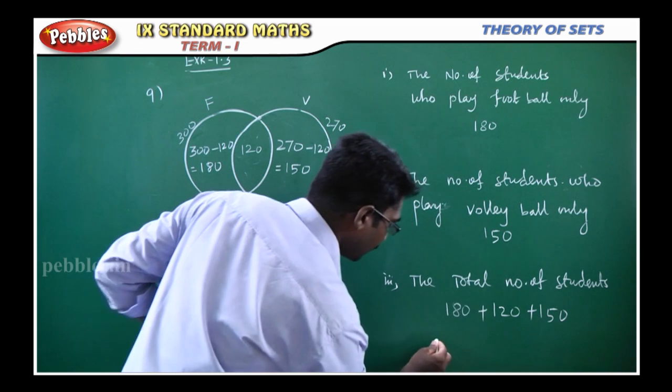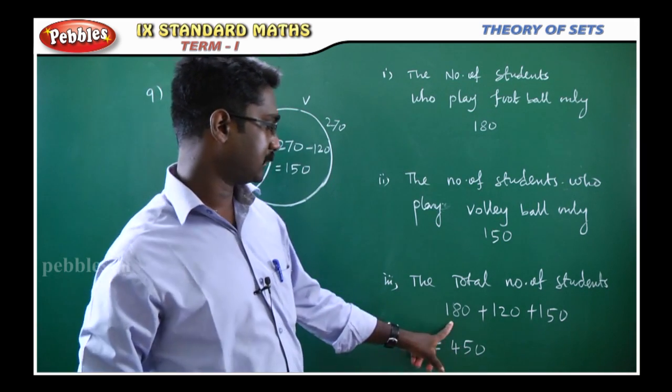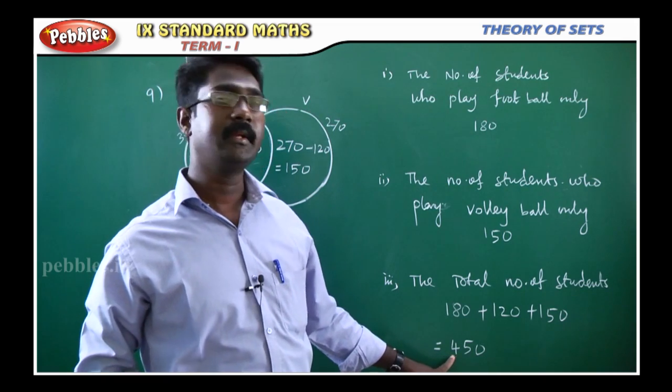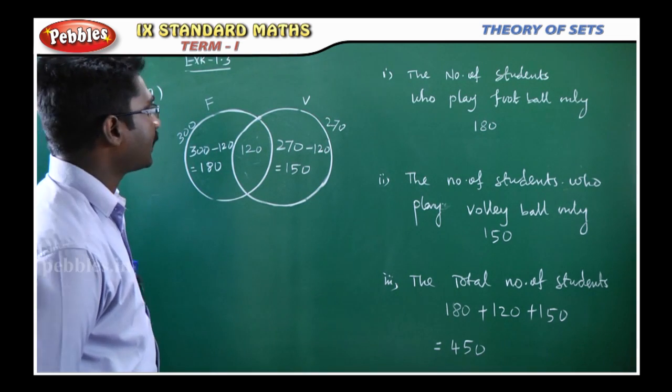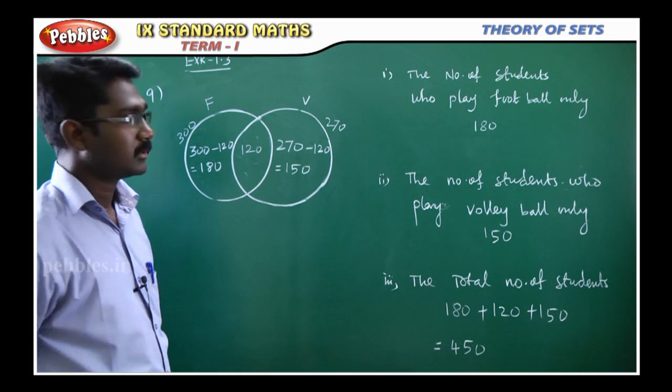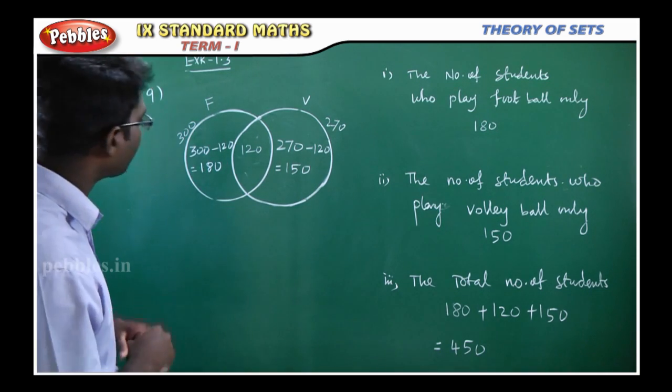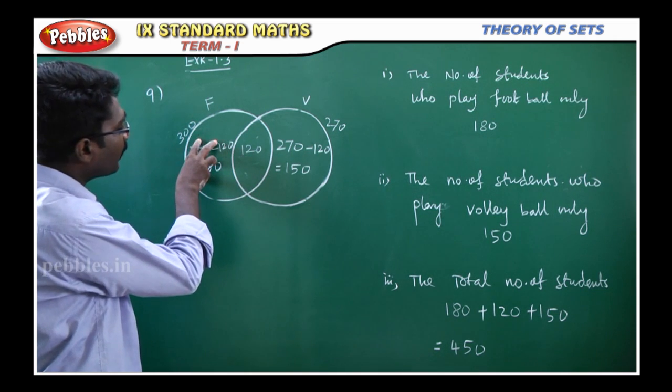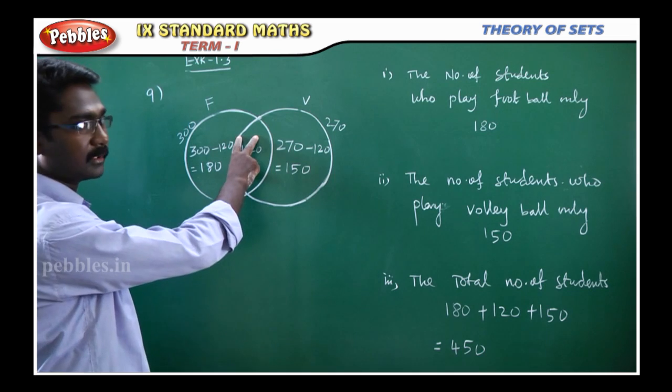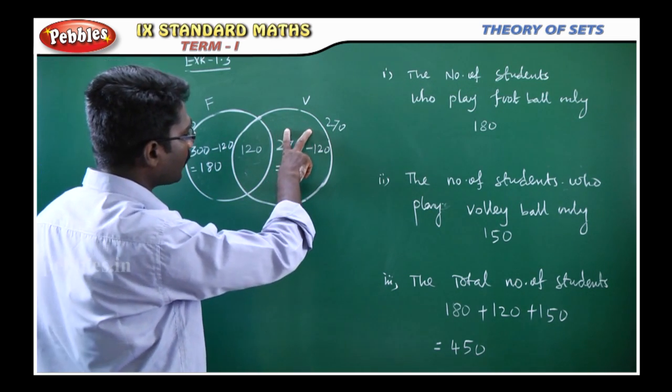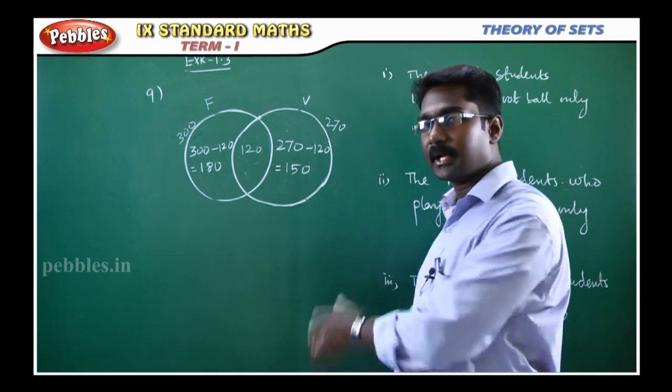The total number of students is 450. So the problem can be solved using the formula method and the Venn diagram method. The Venn diagram method is very simple. This circle is for football - this is only football. This part is both football and volleyball. The next part is volleyball only. That is the Venn diagram method.